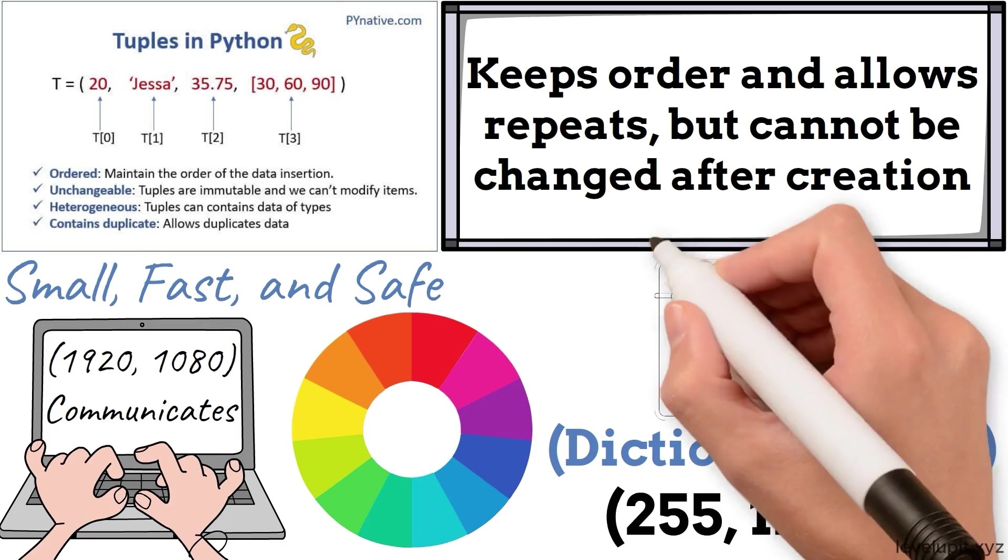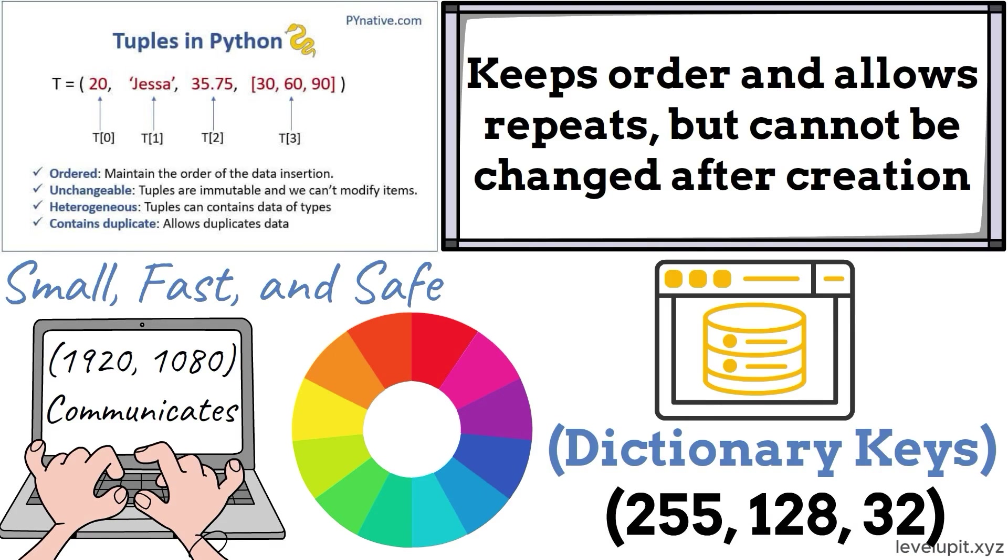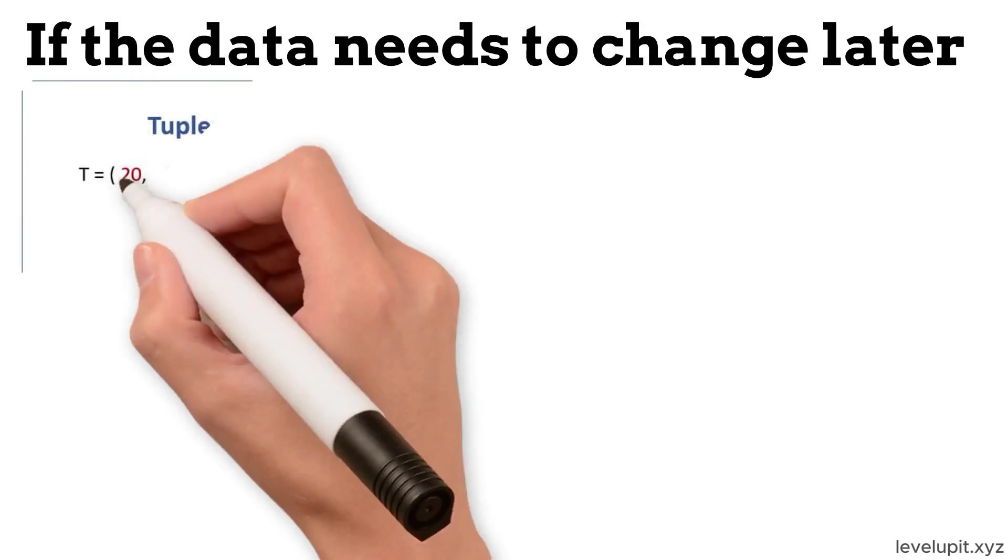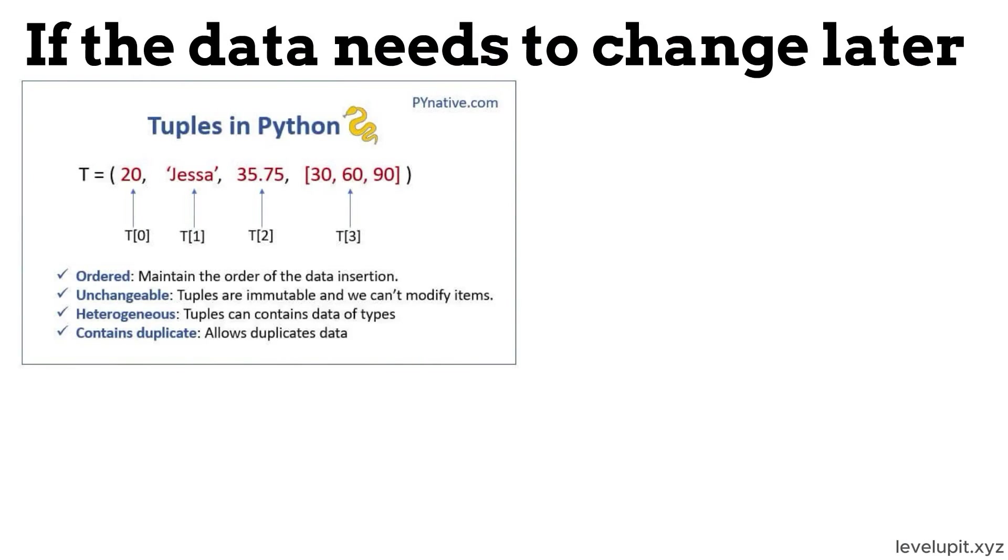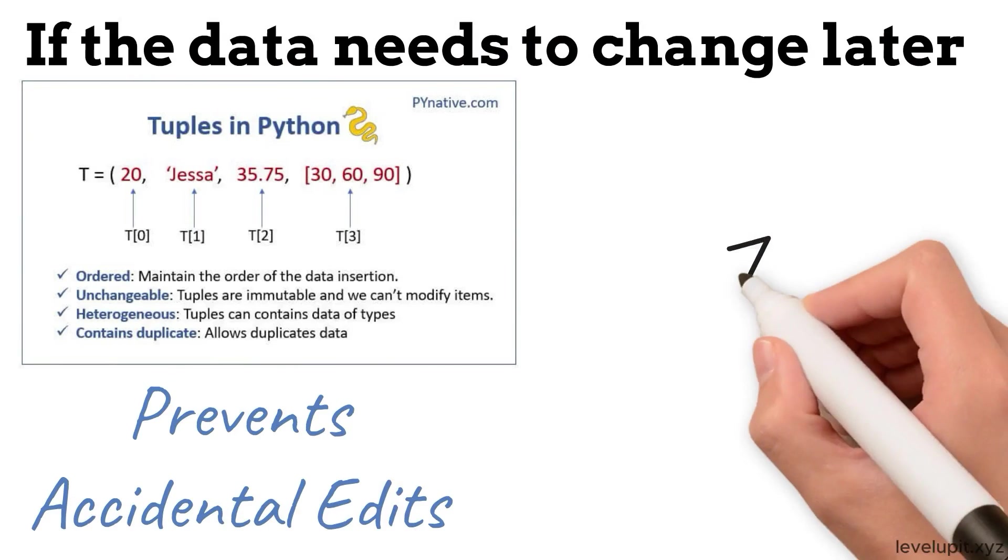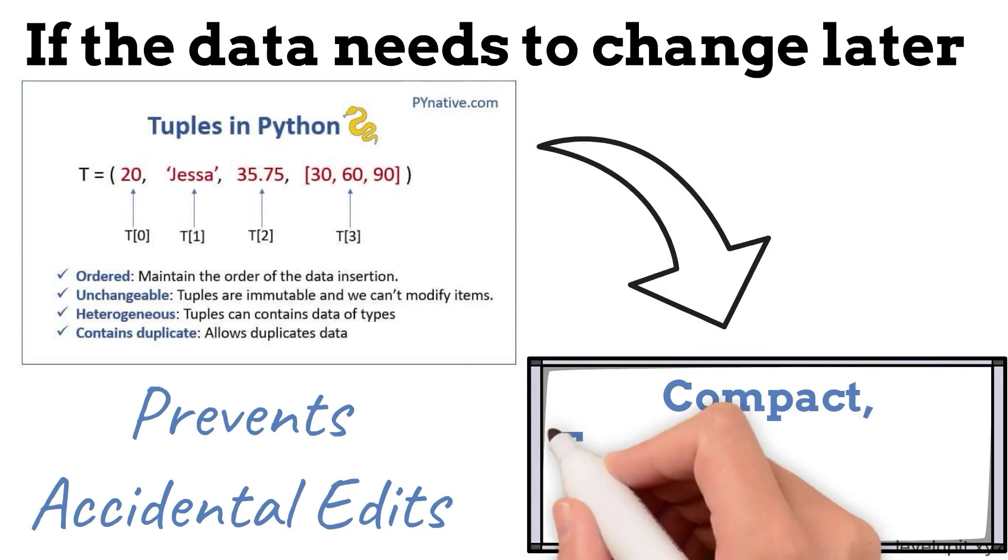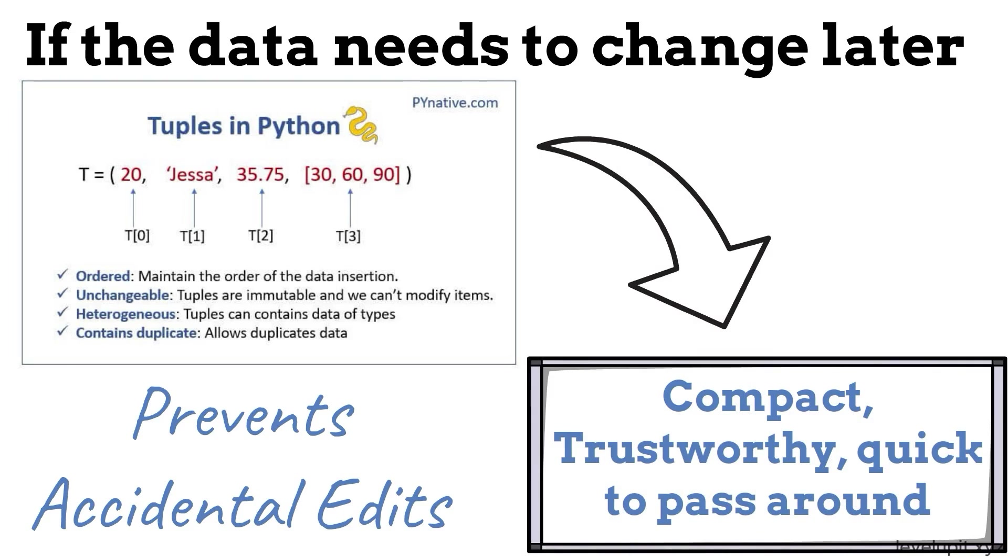Because tuples can be used as dictionary keys if their contents are hashable, they're also great for caches. Map user_id, page to a rendered result, or x, y to a computed distance. If the data needs to change later, a new tuple is created, and that explicit step prevents accidental edits. Think of a tuple as a sealed, labeled packet of values: compact, trustworthy, quick to pass around.